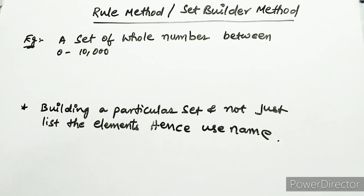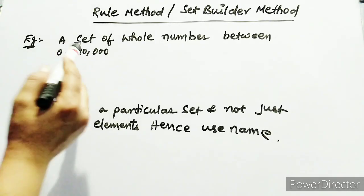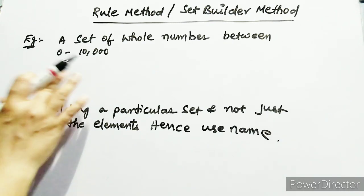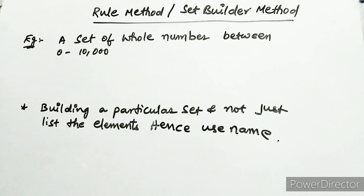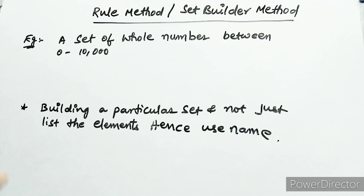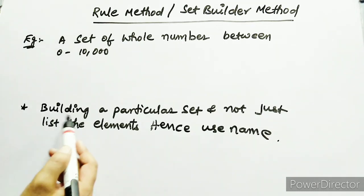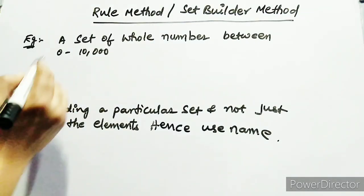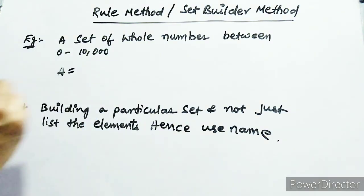Our next topic is the rule method or set builder method. Consider a set of whole numbers between 0 and 10,000. Using the listing method, you would have to list each and every item — the list would be very long, making it impractical. For that reason, the rule method was introduced.